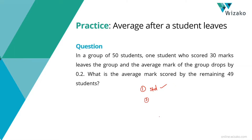In a group of 50 students, one student who scored 30 marks leaves the group — so an element is removed from this group — and the average mark of the group drops by 0.2. Once this person leaves, the average comes down by 0.2. What we need to compute is the average marks of the remaining 49 students.